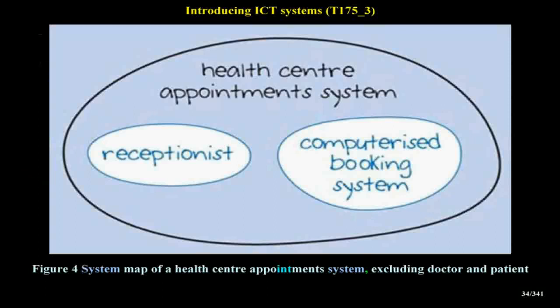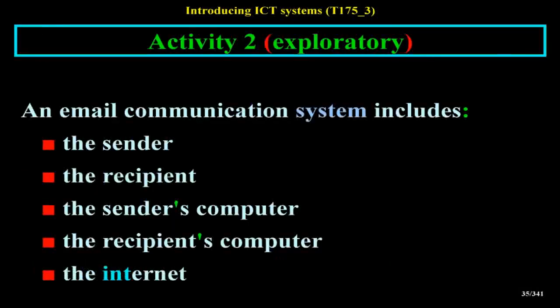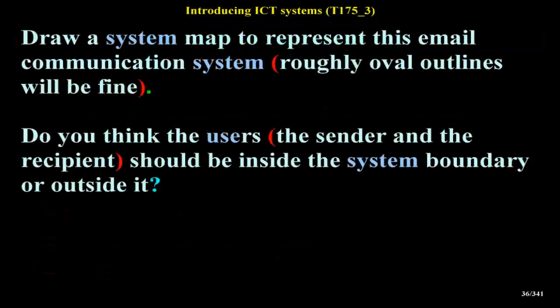Activity 2 Exploratory: An email communication system includes the sender, the recipient, the sender's computer, the recipient's computer, and the internet. Draw a system map to represent this email communication system — roughly oval outlines will be fine. Do you think the users, the sender and the recipient, should be inside the system boundary or outside it?